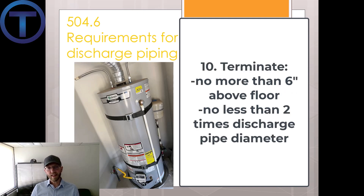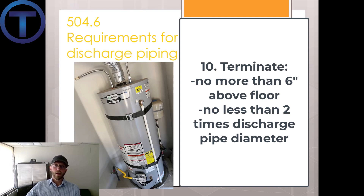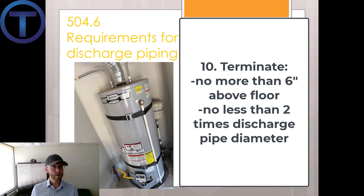Number ten: terminate not more than six inches above the floor and not less than two times the discharge pipe diameter above the floor. Two times the pipe diameter is the air gap. We don't want the pipe cut short and just coming halfway down the water heater spraying water — we could get burned as we approach. So at a maximum six inches above the floor, but at least two times the pipe diameter, which is typically about one and a half to two inches.